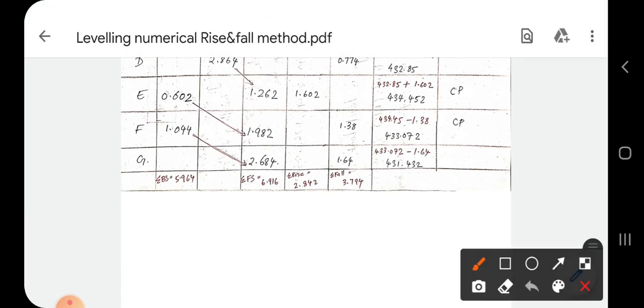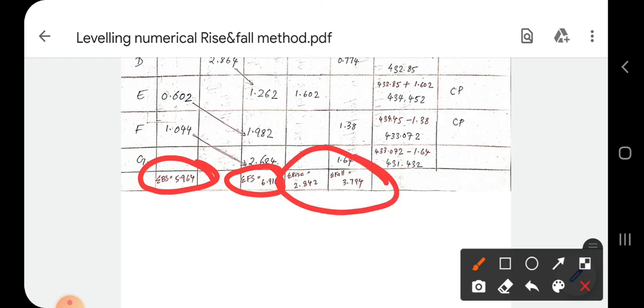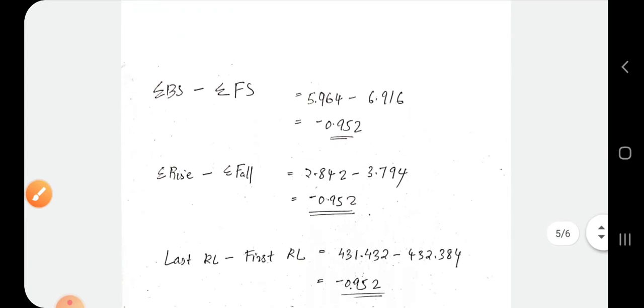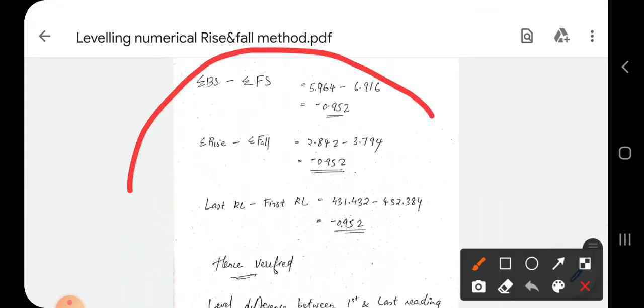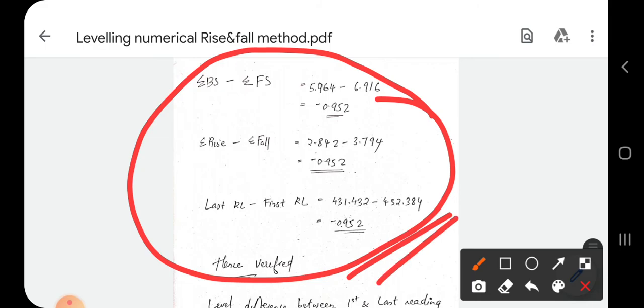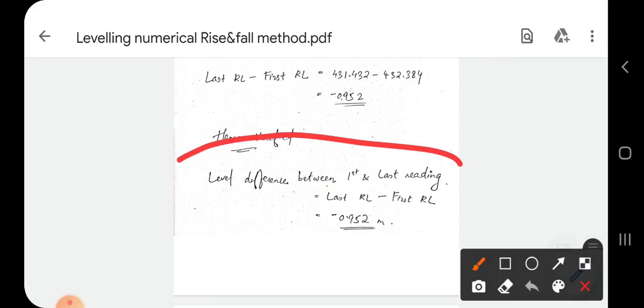Next, check the summation of backside to summation of foresight, and the summation of rise and fall. The level difference between first and last reading is the last reduced level minus first reduced level, which equals minus 0.952. The last point is lower.